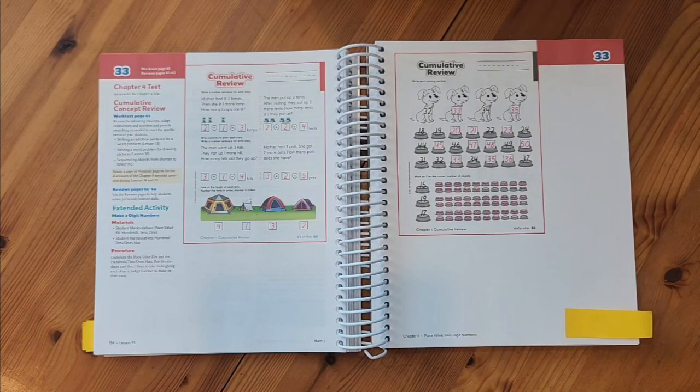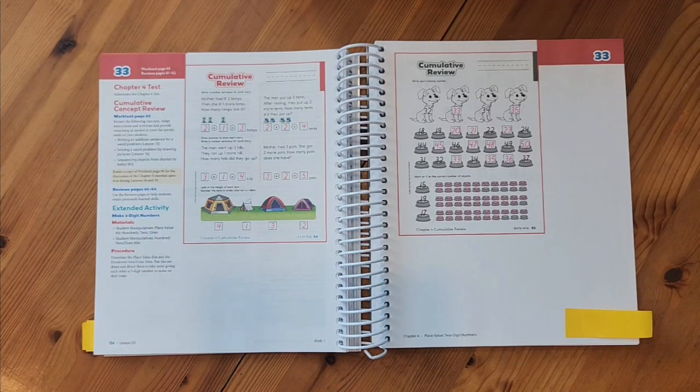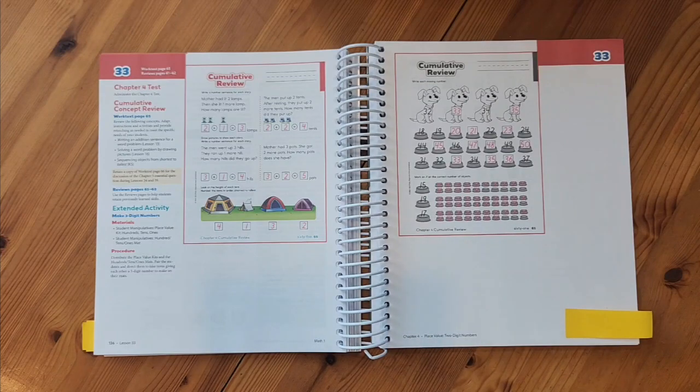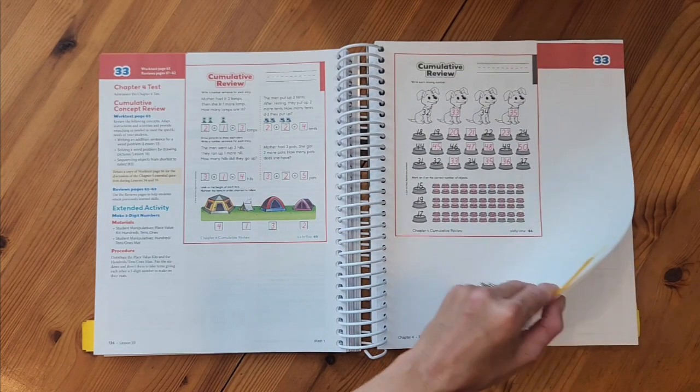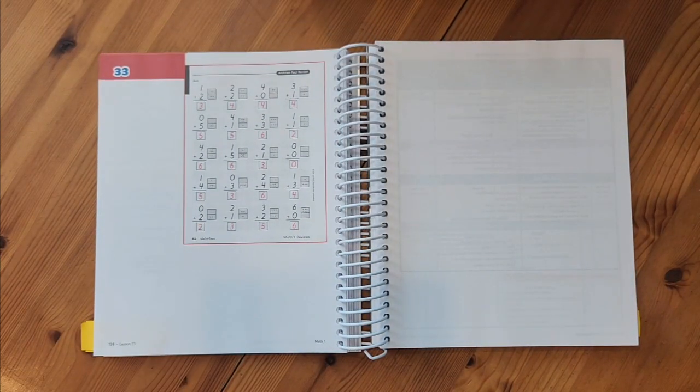So now in lesson 33 we have the chapter 4 test and we also have a cumulative review. So the cumulative reviews are going to review anything from previous chapters so far in Math 1. And then we've also got a cumulative review page in the review book as well. And actually on this one we have two pages so that would be the second page which is an addition fact review.